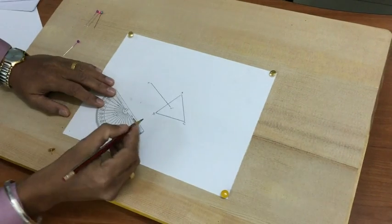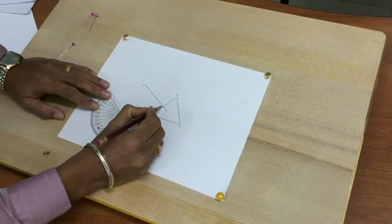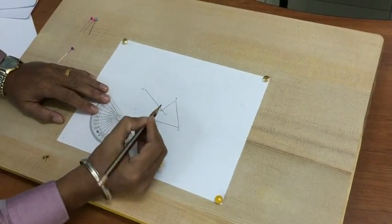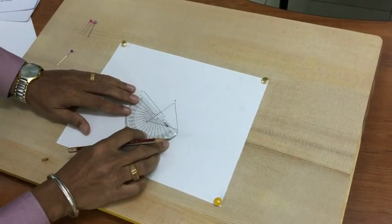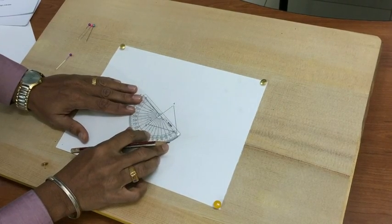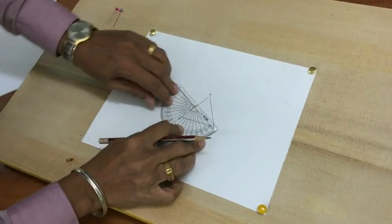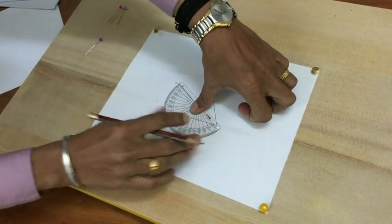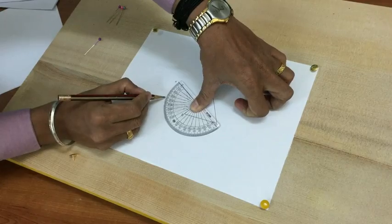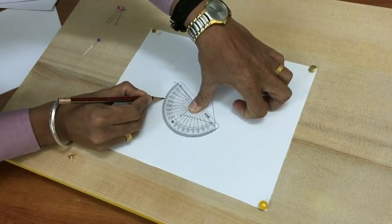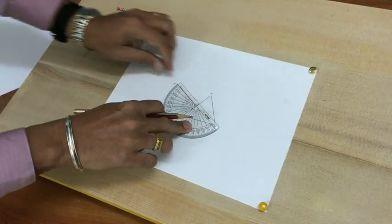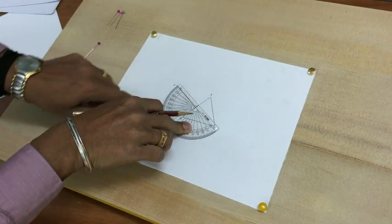Wait just one second. Mark this point as O. Keep the protractor exactly at point O along the normal that you have just drawn and mark an angle of 35 degrees making an angle with the normal.